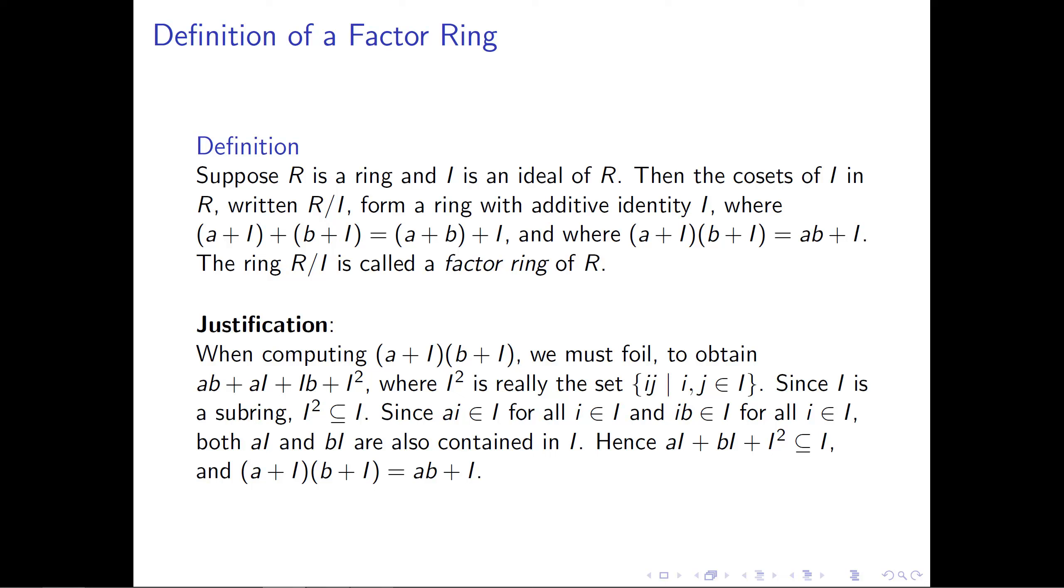And I is a subring, so we're allowed to take elements of I and add them together, and what we're going to get in that situation is just another element of I. So when you look at this, the last three terms in that summand that we've foiled out, this aI plus Ib plus I², what we're getting is a subset of I. So we can take all of those things and combine them together, collapse them into just the set I.